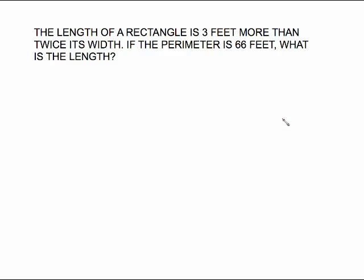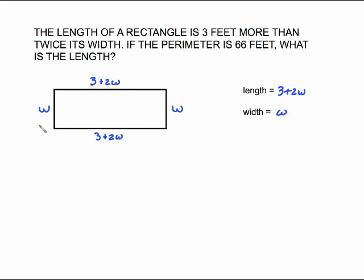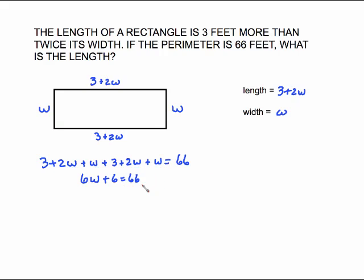Problem 4: The length is 3 feet more than twice the width. If the perimeter is 66 feet, what is the length? The problem tells you nothing about the width, so width is the plain old variable W. The length is 3 more than twice the width, so length equals 2W plus 3. Label the picture: width sides get W, length sides get 2W plus 3. Now write the equation: (2W plus 3) plus W plus (2W plus 3) plus W equals 66. Combining: 2W plus W plus 2W plus W gives 6W, plus 6 equals 66.